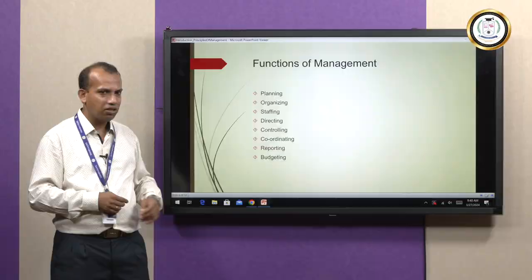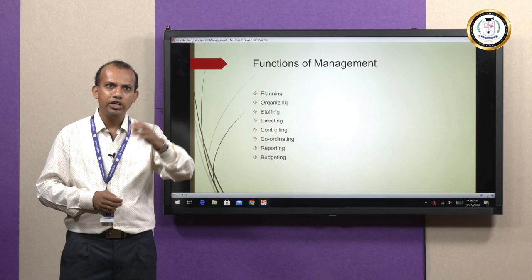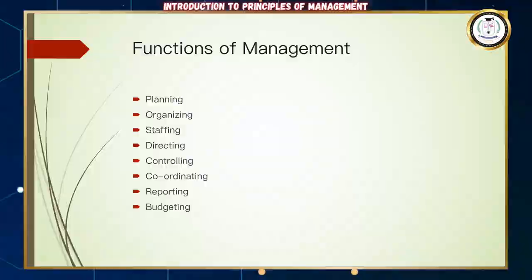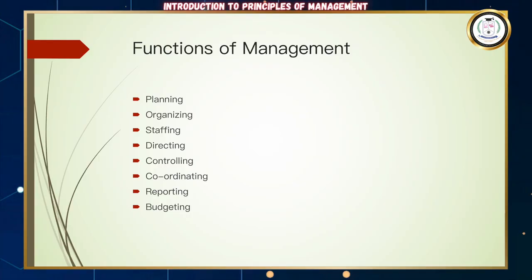Controlling involves establishing standards and measuring your actions against your estimates to check for deviation, and if there is any deviation, taking corrective actions. Coordinating is more like a support function — it basically involves synchronizing and unifying the actions of people and groups of people.